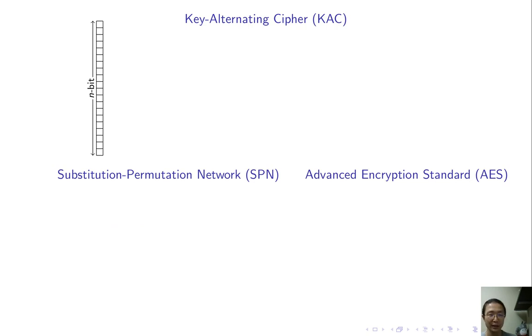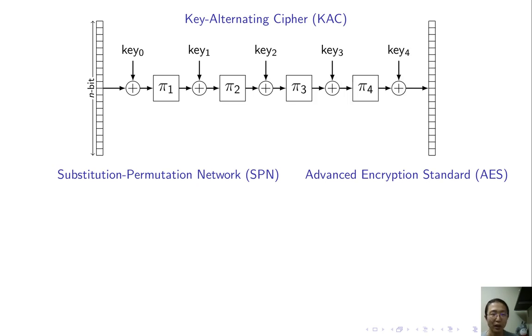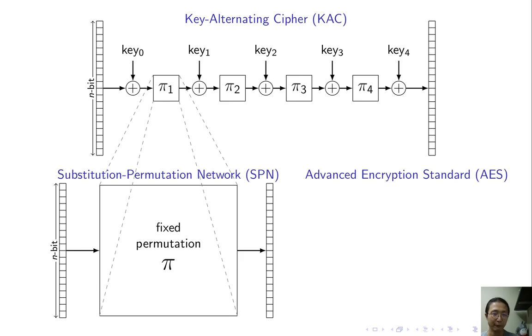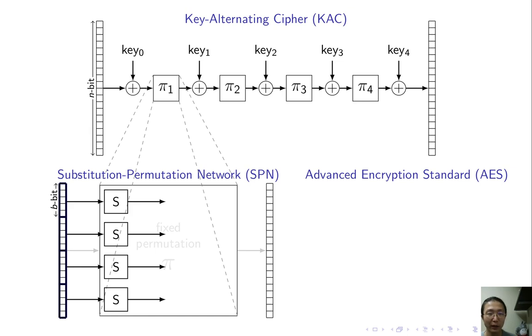To encrypt an input using KAC, first XOR it with a round key, then apply a fixed and public permutation. Then repeat this process. This is called a round; repeat it many times to get the output. SPN is a special case of KAC. It also tells you how to construct this fixed permutation. First, divide the input into a few small blocks. Apply a small permutation called S-box to every block. Then, mix the output using a linear function. Both operations are very efficient. The S-box can be complicated, but it's only over a small domain. The linear function is over a large domain, but it's very simple.